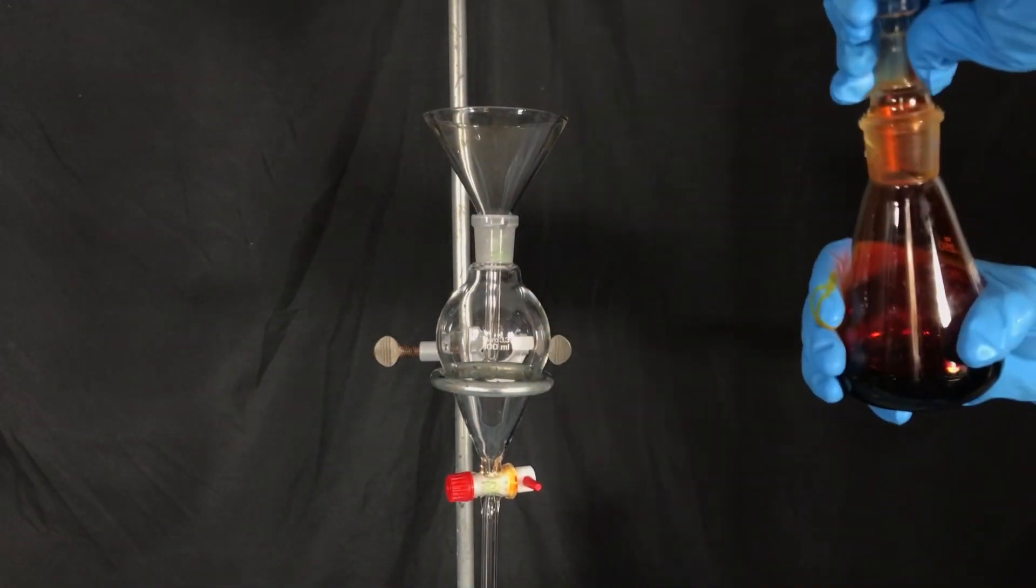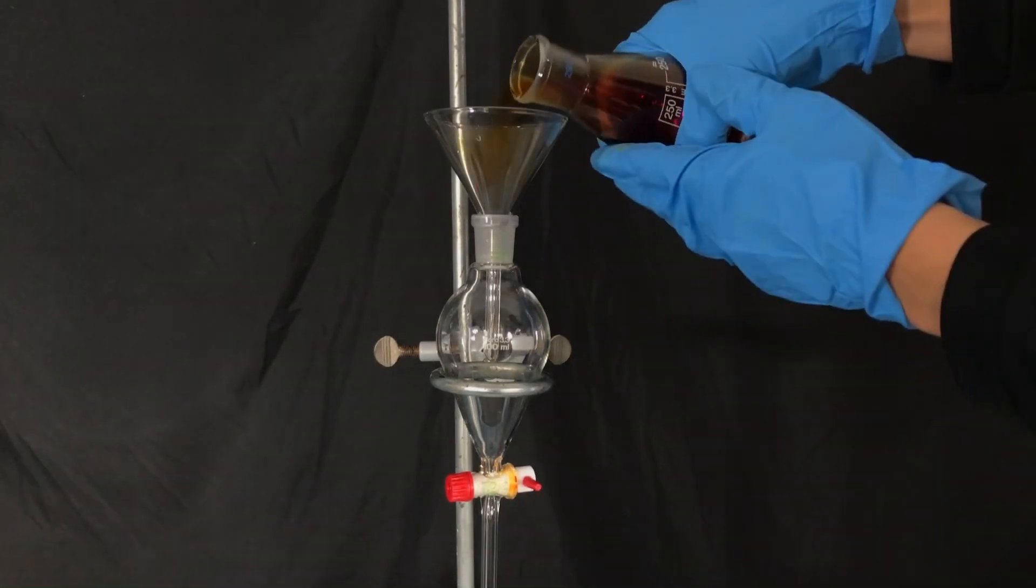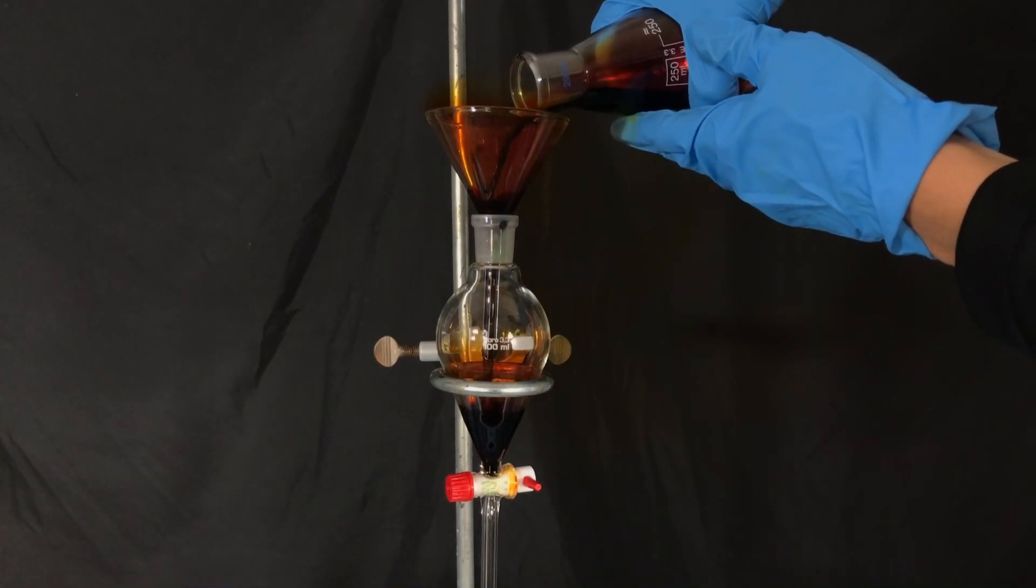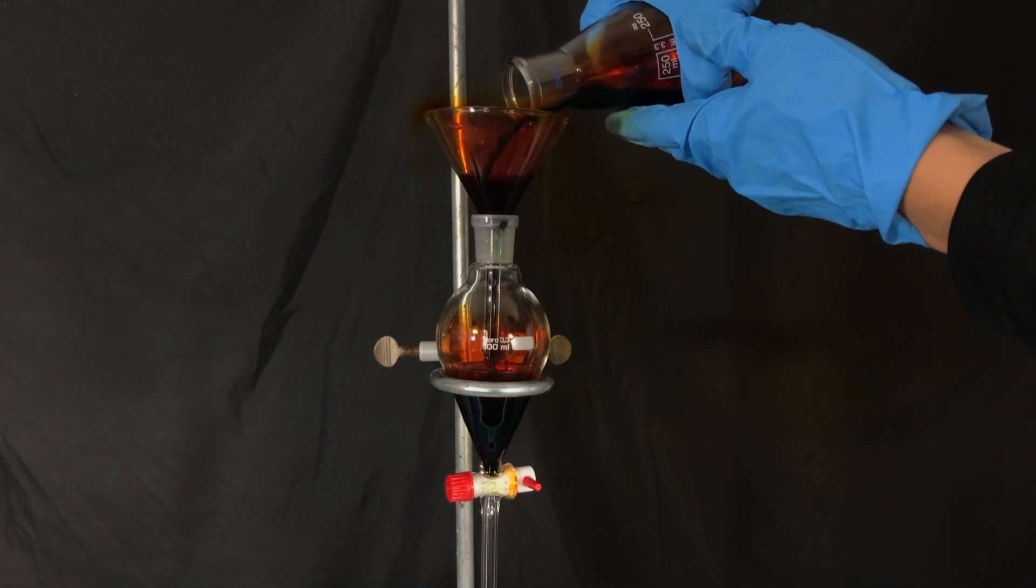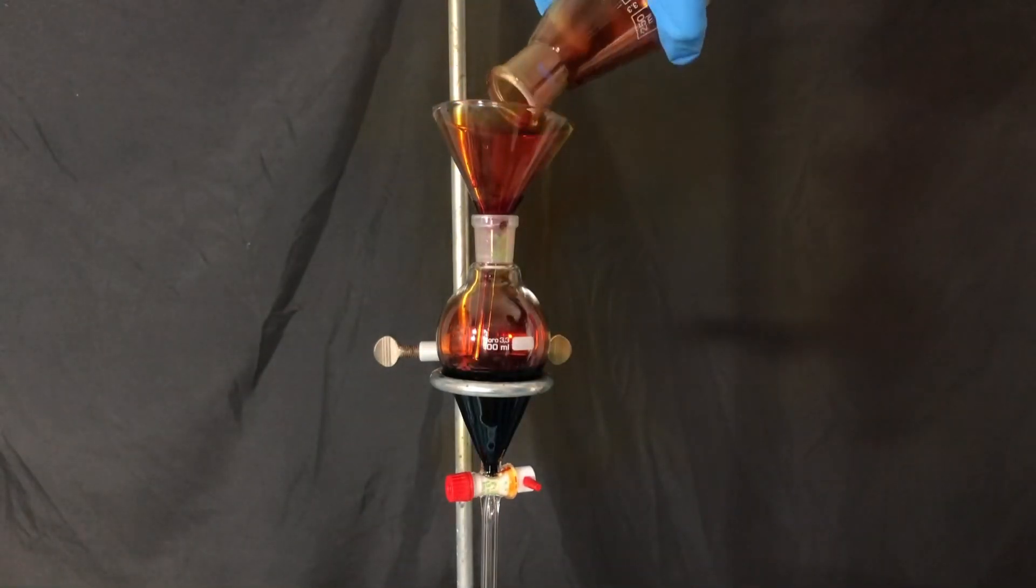The bromine was then transferred to a freshly cleaned and dried separatory funnel. This is because the bromine still contains water and we want bromine that is nearly water free. To do this a dehydrating agent such as sulfuric acid has to be added.